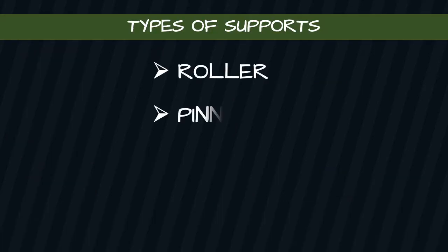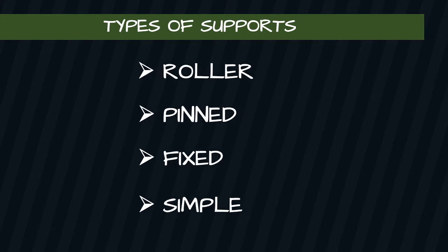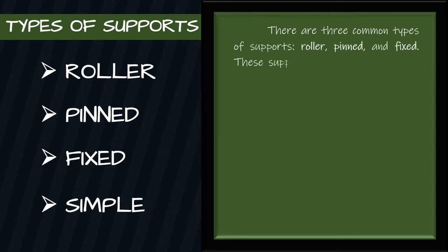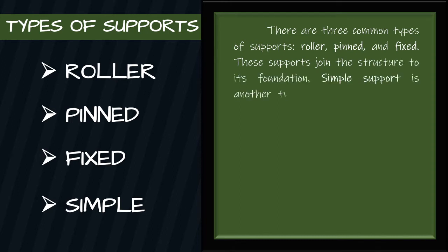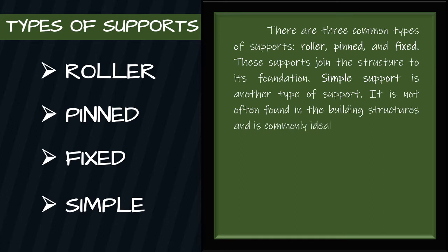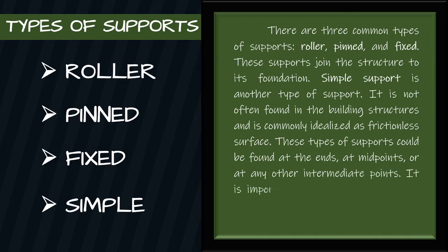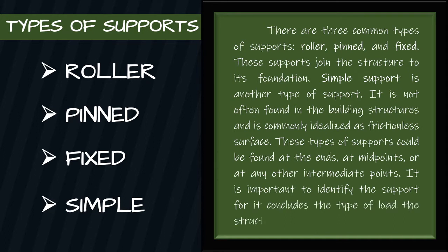Let us now proceed to the types of supports. There are three common types of supports: roller, pinned, and fixed. These supports join the structure to its foundation. Simple support is another type of support — it is not often found in building structures and is commonly idealized as a frictionless surface. These types of supports could be found at the ends, at midpoints, or at any other intermediate points. It is important to identify the support, as it determines the type of load the structure should carry.